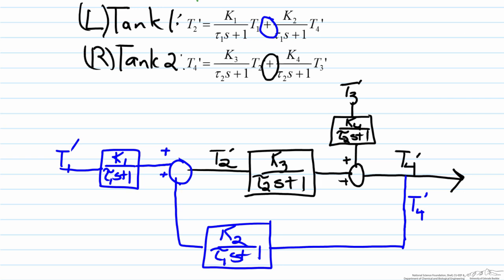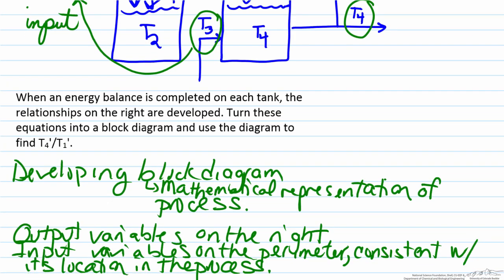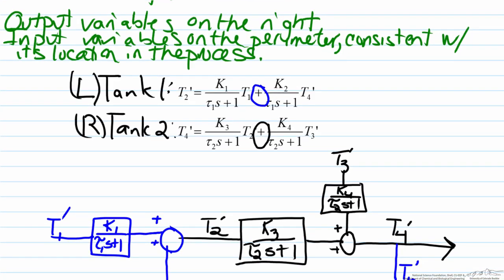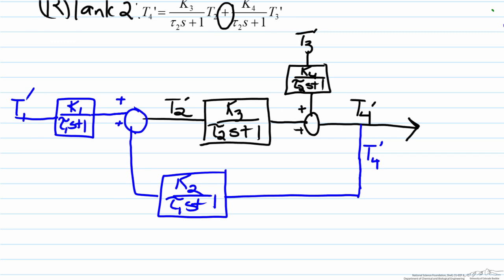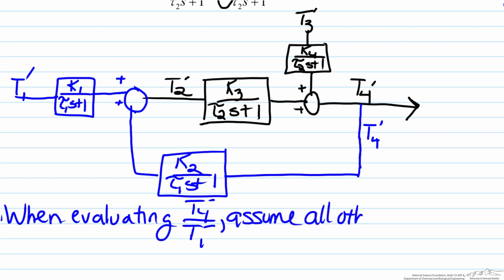So if we look at the second part of the question, if we go back to what we had, the question asked not only to turn the equations into the block diagram, but also to use the diagram to find the relationship between T4 and T1. So an important point to note here is when we are trying to find this relationship, when we are evaluating T4 prime over T1 prime and you are looking at how one output variable is affected by one input variable, you assume all other inputs are zero.